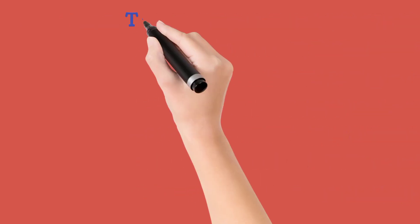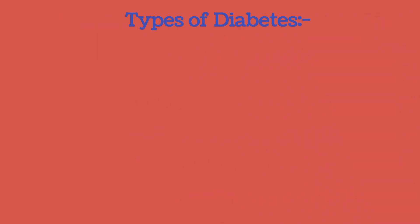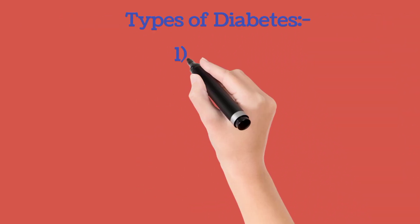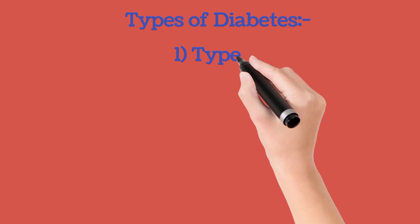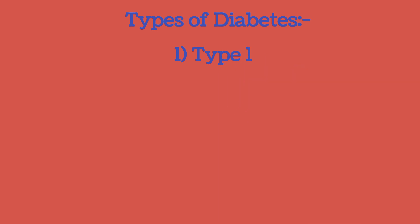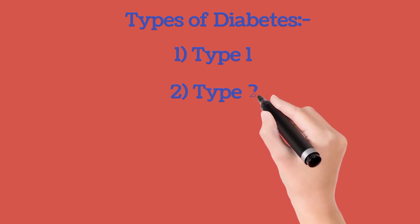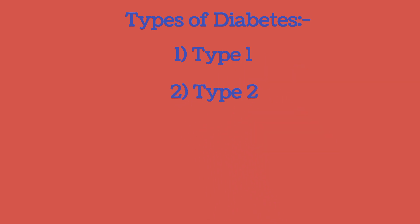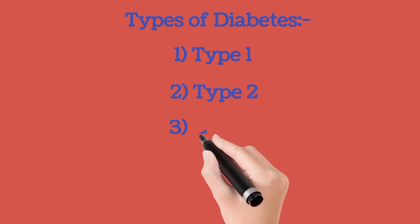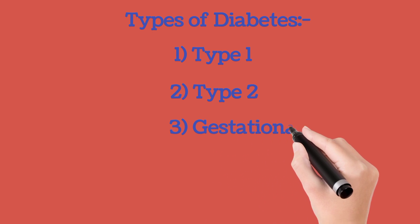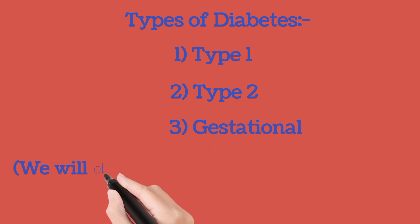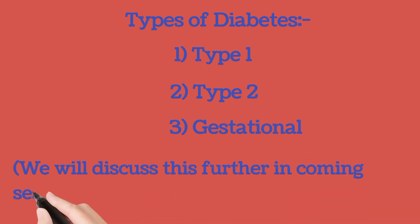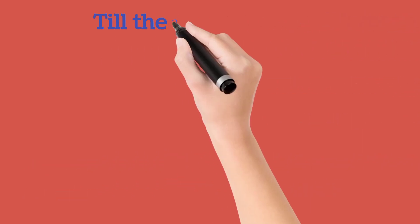There are mainly two types of diabetes: Type 1, Type 2, and one more — gestational. We will elaborate each and every type in the next coming section. For now, stay tuned. Thank you and take care.